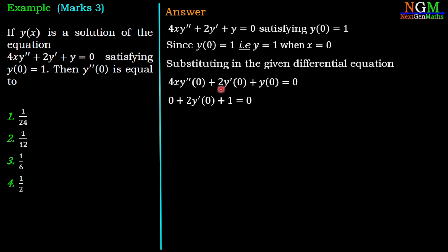In the second term, 2y'(0), and the third term we have y(0) = 1, that is given. So if we simplify this equation, we have y'(0) = -1/2. So we get the first value: y'(0) = -1/2.